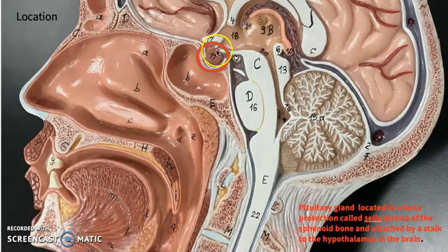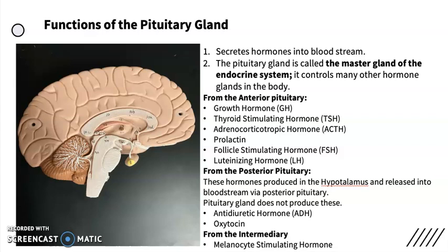80% of the hypophysis is the anterior lobe. Between them, we have a tiny portion we call the intermediate lobe. The pituitary gland secretes hormones into the bloodstream and is also called the master gland of the endocrine system because it controls many other glands in the body. However, it takes orders from the hypothalamus, which sends signals through releasing hormones to the pituitary gland, telling it how much hormone is needed to send to the other glands.